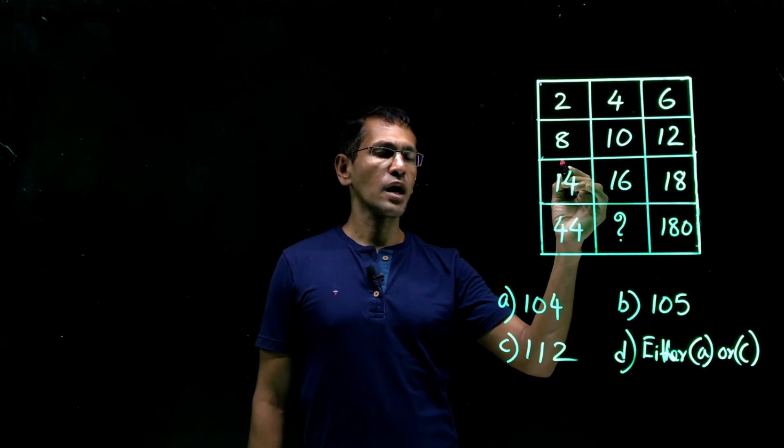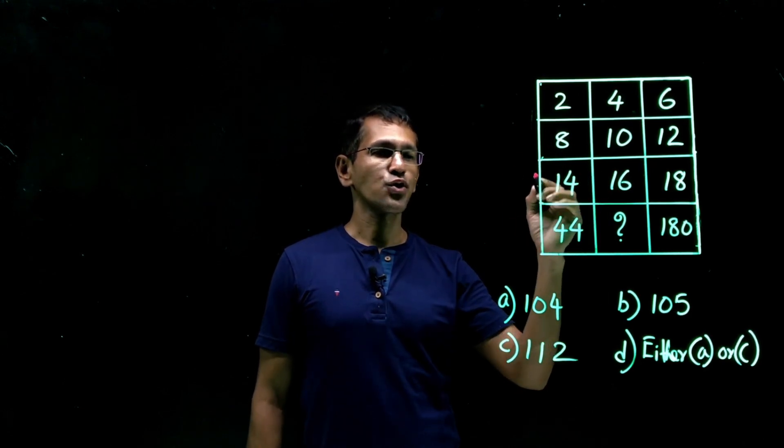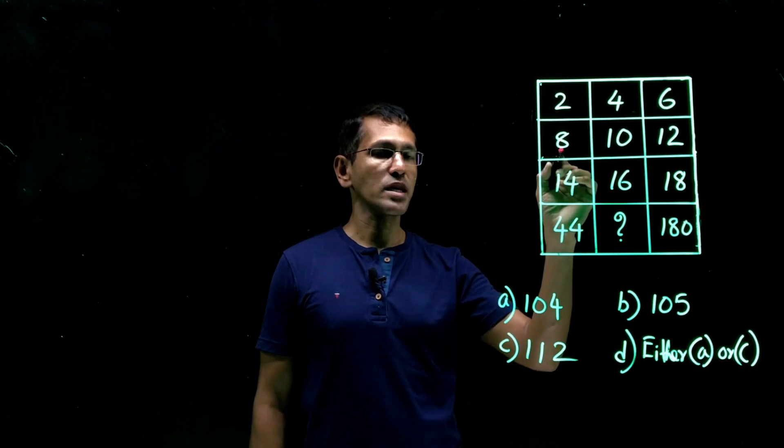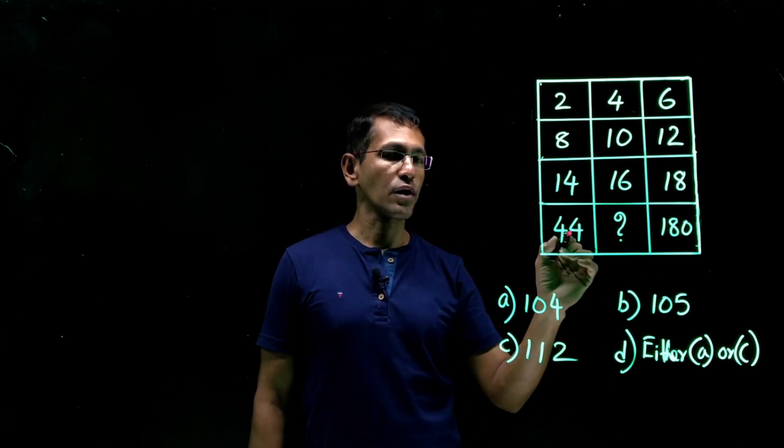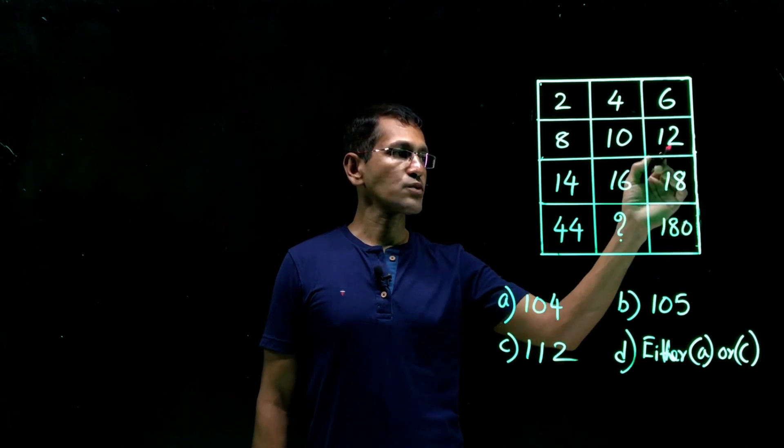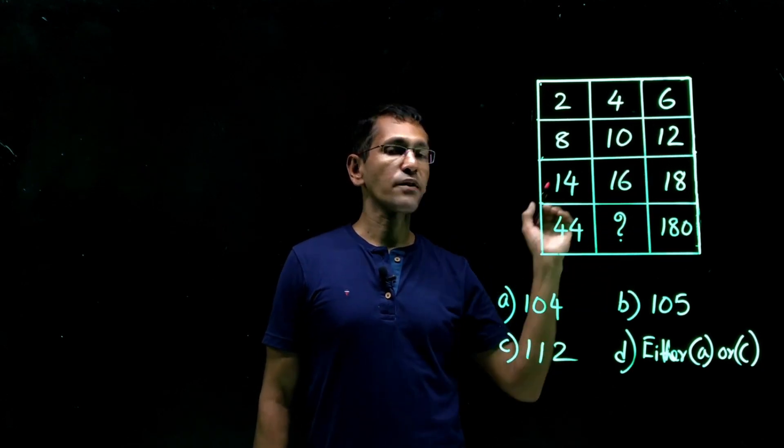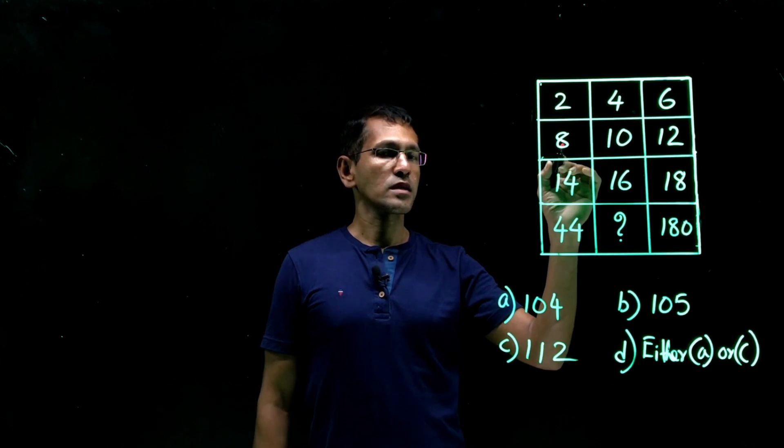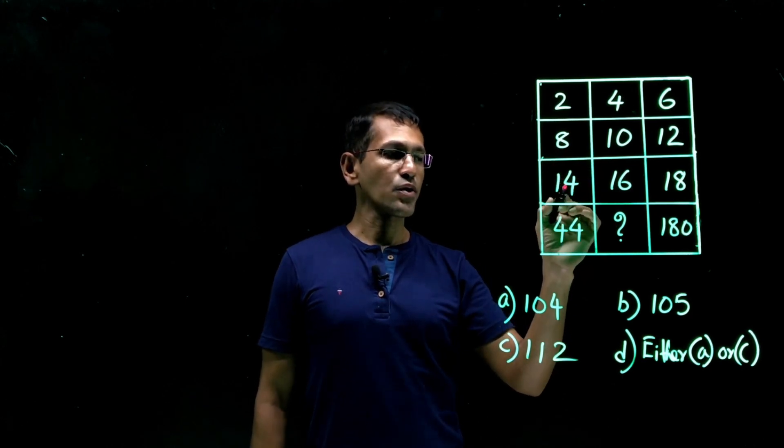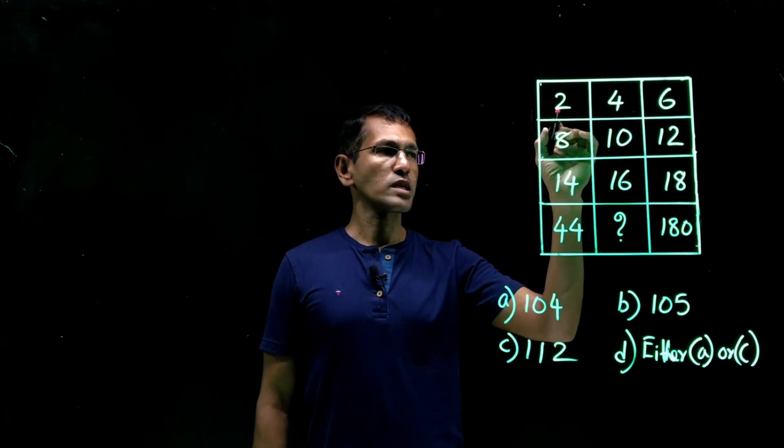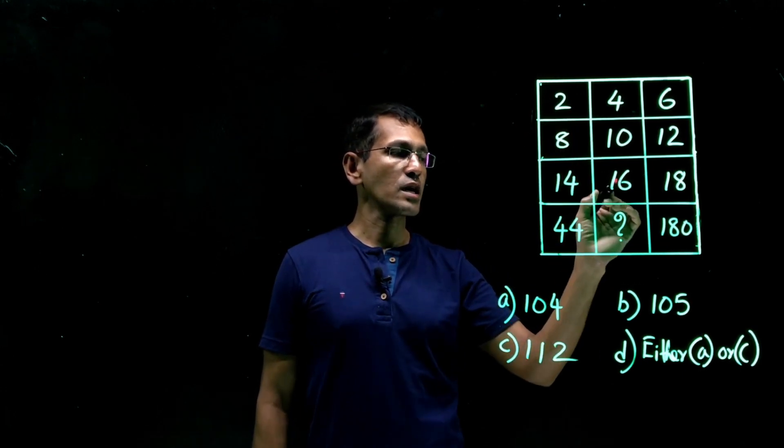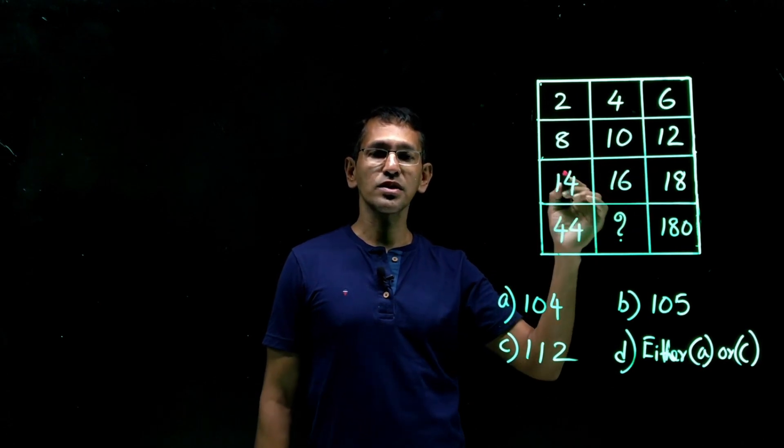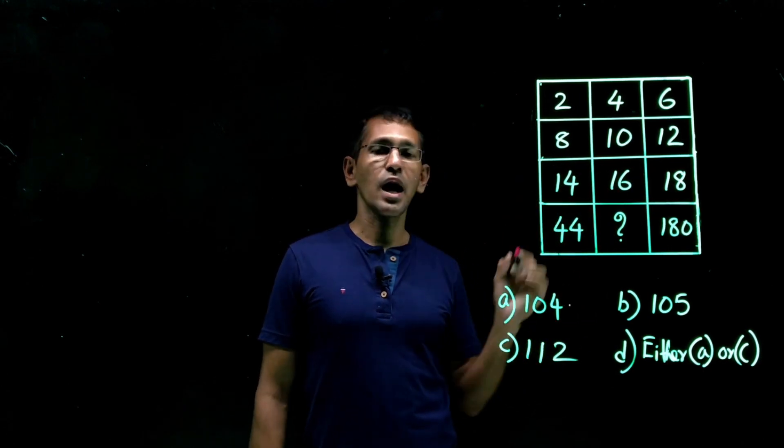Anything else come to your mind at this point of time? 14 plus 8? 22. 22 into 2? 44. Well, 14 plus 8? 22. 22 into 2? 44. How about we check it over here. 18 plus 12? 30. 30 into 6? 180. Perfectly alright. So what is the pattern? Third column plus second column, I mean, third row plus second row. That must be multiplied by the first row. So we'll take a look at here. 16 plus 10? 26. 26 into 4? 25 into 4 is 100. 26 into 4? 104. Yes, we have the answer right here.